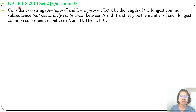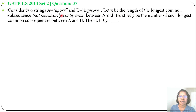Hi, let's solve a previous question on dynamic programming. This question was asked in GATE CH 2014 Set 2, Question Number 37. Consider two strings A = QPQRR and B = PQPRQRP. Let X be the length of the longest common subsequence (not necessarily contiguous) between A and B, and let Y be the number of such longest common subsequences between A and B. Then X plus 10Y equals?